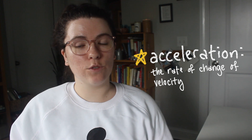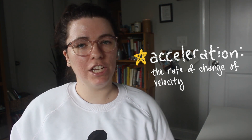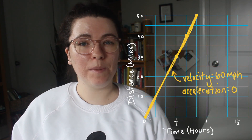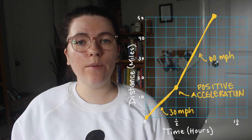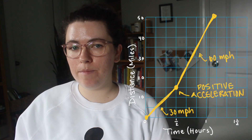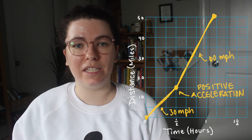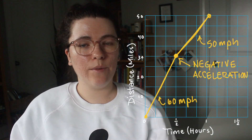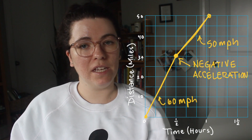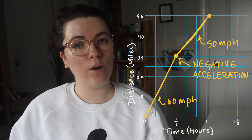If velocity is how fast we're going, acceleration is how fast we change how fast we're going. Acceleration is the rate of change of velocity. If I were driving on the highway and my speed was set with cruise control to 60 miles per hour, I would have an acceleration of zero — my speed is not changing. When I entered the highway and had to change from 30 miles per hour to 60 miles per hour, I had positive acceleration. If there was traffic and I needed to change from 60 miles per hour to 50 miles per hour, I would have negative acceleration.